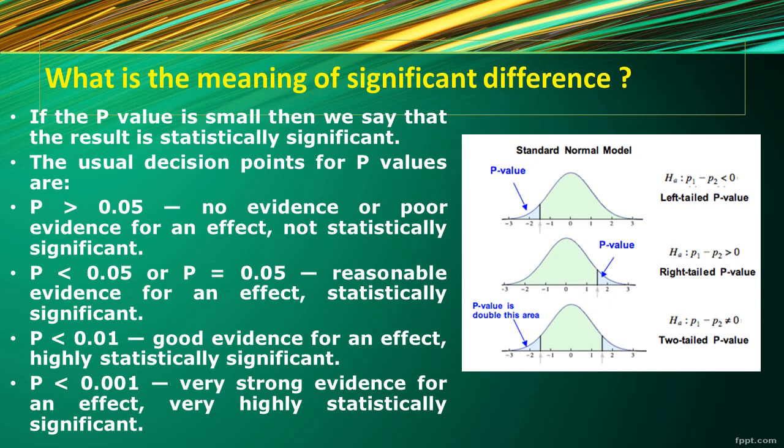What is the meaning of significant difference? If the p-value in any comparison of groups in research is small, then the results are statistically significant. There are four decision points for p-value: p greater than 0.05, p less than 0.05, p less than 0.01, and p less than 0.001. P more than 0.05 means no evidence of effect — it is statistically non-significant, meaning no relationship between variables and the null hypothesis is acceptable.